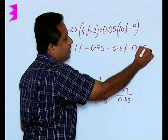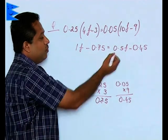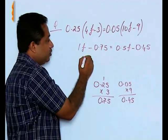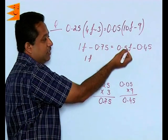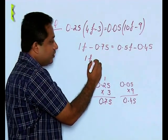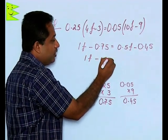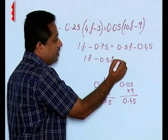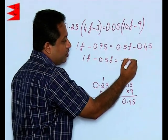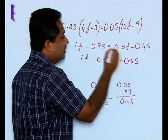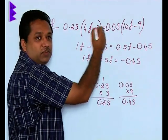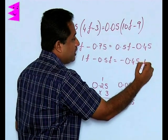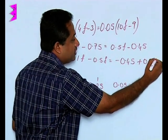After getting this value as 0.45, we have to bring the like terms on one side. This is going to be 1F minus 0.5F. 0.5F is shifted on the left, so that will become minus 0.5F equals negative 0.45. This minus 0.75 is shifted to the right, you get positive 0.75.